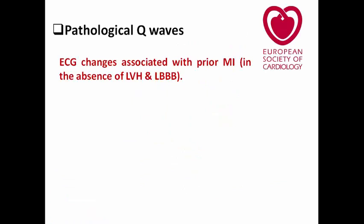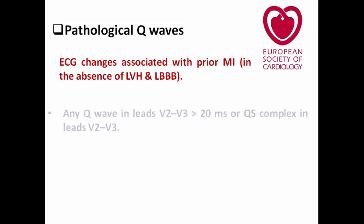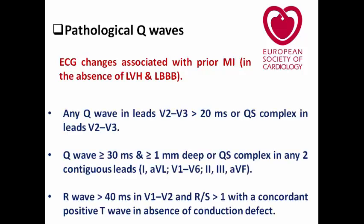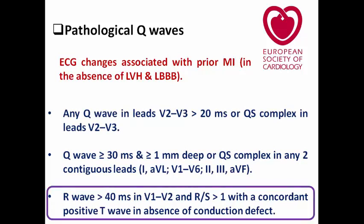Remember from the ECG in STEMI lecture the definition of pathological Q — one of the criteria was an R wave more than 40 ms in V1 and V2 with RS ratio more than 1 and concordant positive T wave in the absence of a conduction defect. Now we understand why: pathological Q in posterior MI appears as a tall R wave more than 40 ms in V1 and V2 with a predominantly positive complex due to the posterior MI.